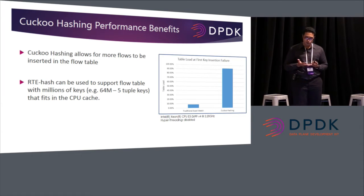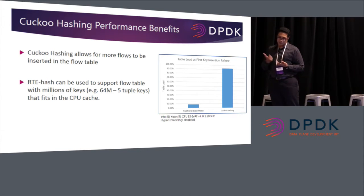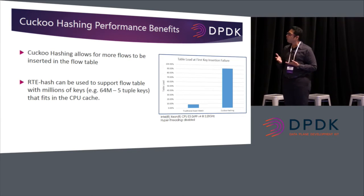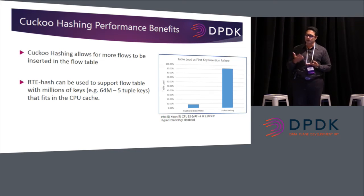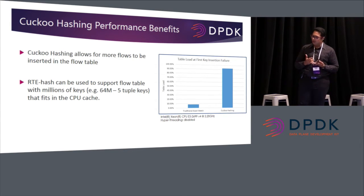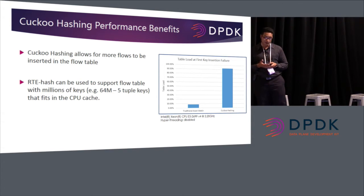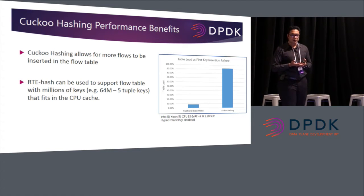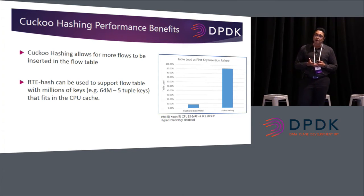The results of cuckoo hashing: the Y-axis shows the table load at which the first insertion failure happens. With the traditional open addressing scheme, this happens at around 8% — only 8% of the table is loaded when you start getting rejections. With cuckoo hashing, this goes up to 95%. We have tested with the RTE hash library in DPDK today and can support 64 million 5-tuple keys easily.